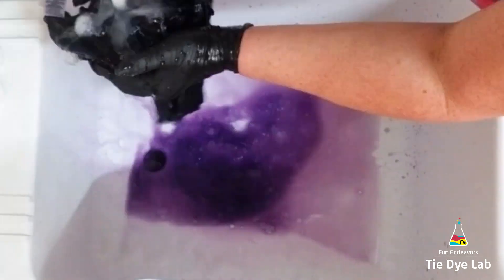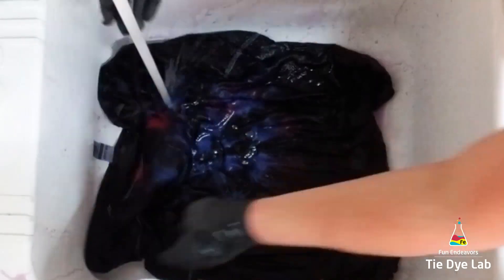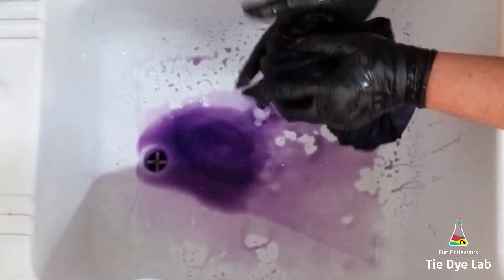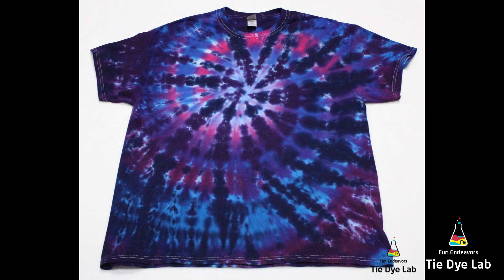Once the rinse water is clear or close to clear, I put it in the washing machine with some hot water and Dharma's textile detergent. Wash it, dry it, and then this is what our shirt looks like.